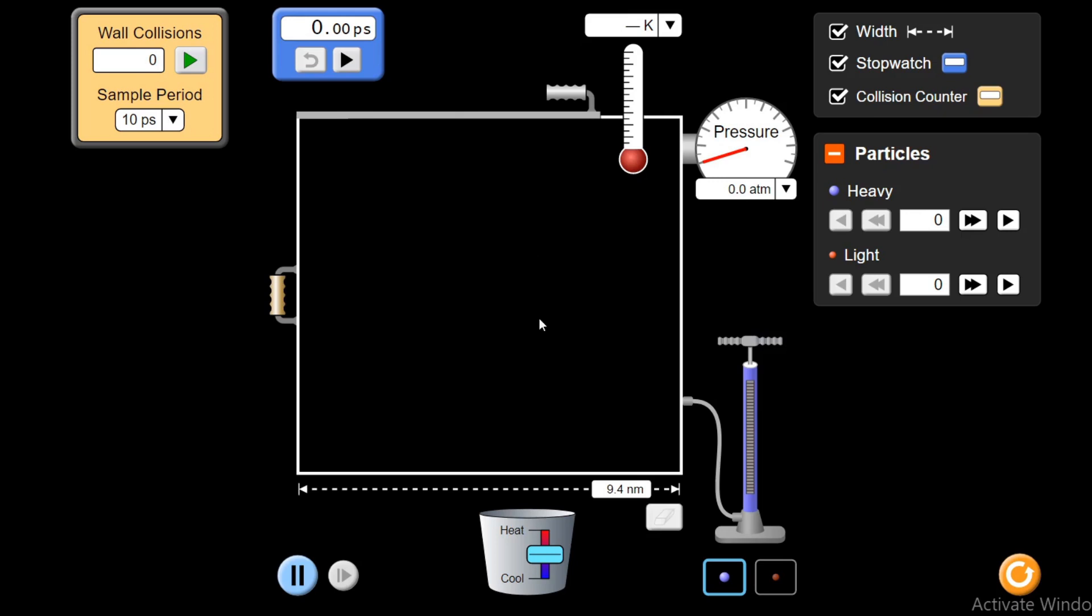Initially, you see there are no molecules here, so no pressure. Number of collisions with the walls is zero and pressure, which is shown here in atmospheric pressure, is also zero.